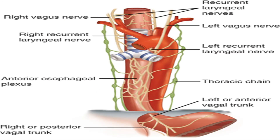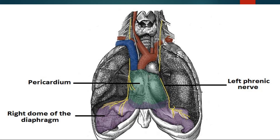The esophageal opening lies at the level of the tenth thoracic vertebra. Passing through the esophageal hiatus are the right vagus nerve, the left vagus nerve, the anterior esophageal plexus, esophageal branches of the left gastric vessels, and lymphatic vessels. The caval opening also carries the right phrenic nerve along with it, while the left phrenic nerve pierces the diaphragm separately.